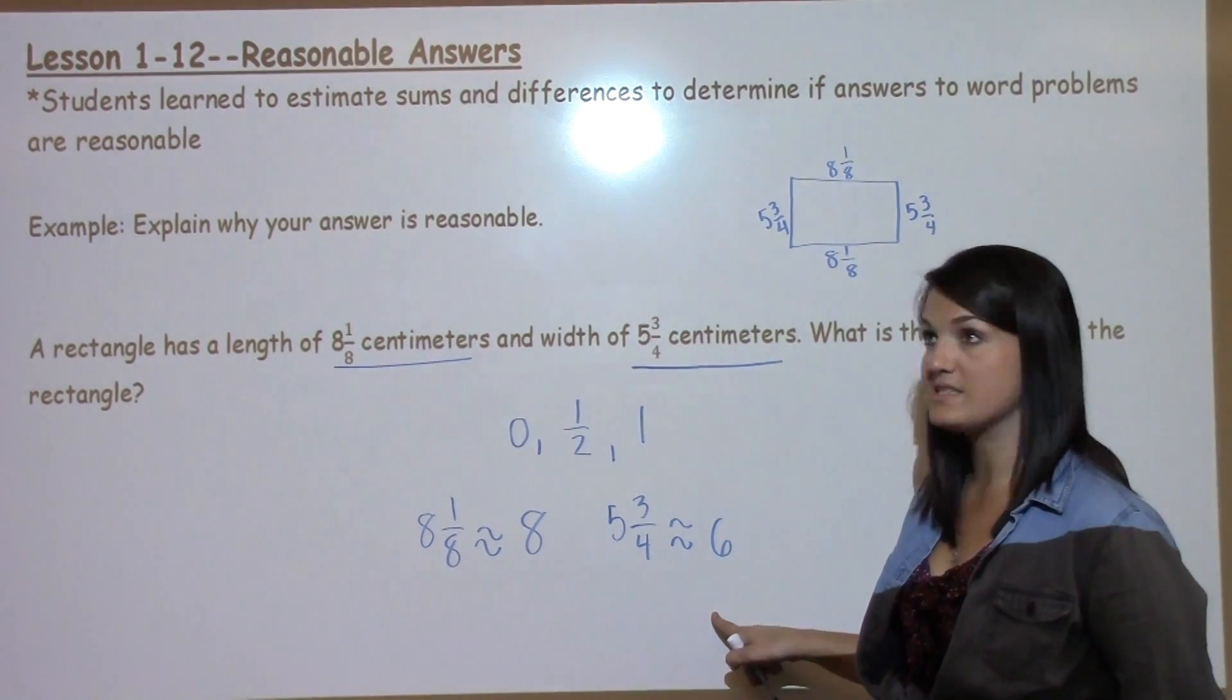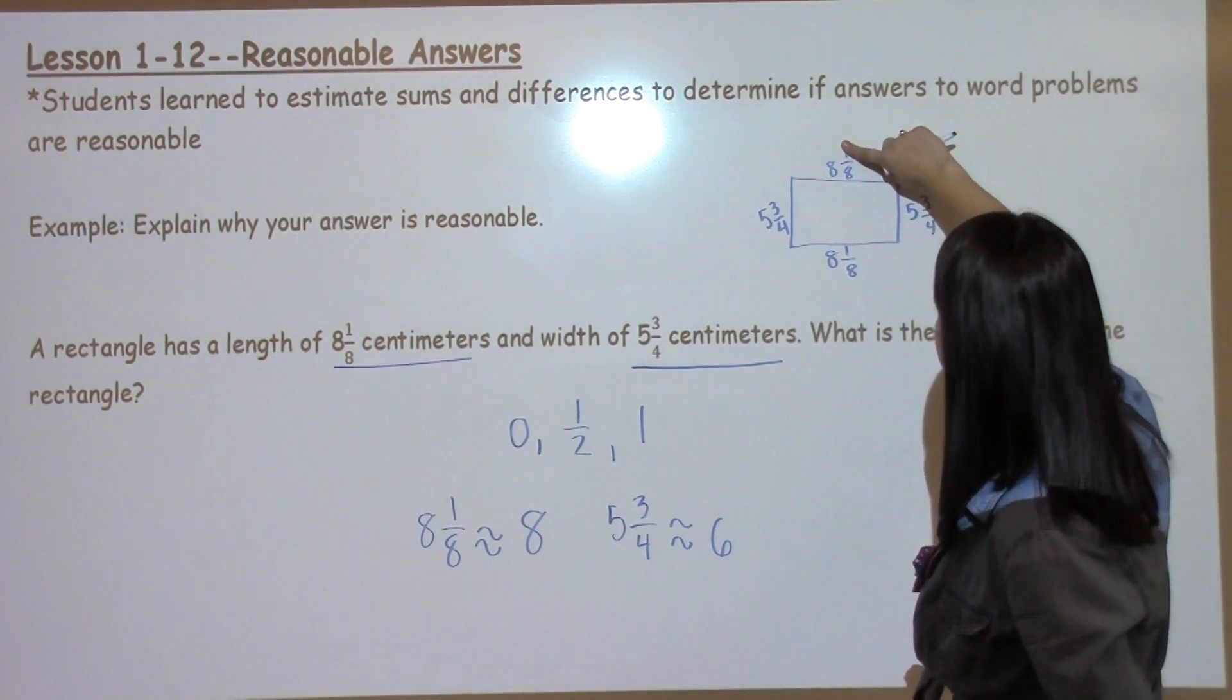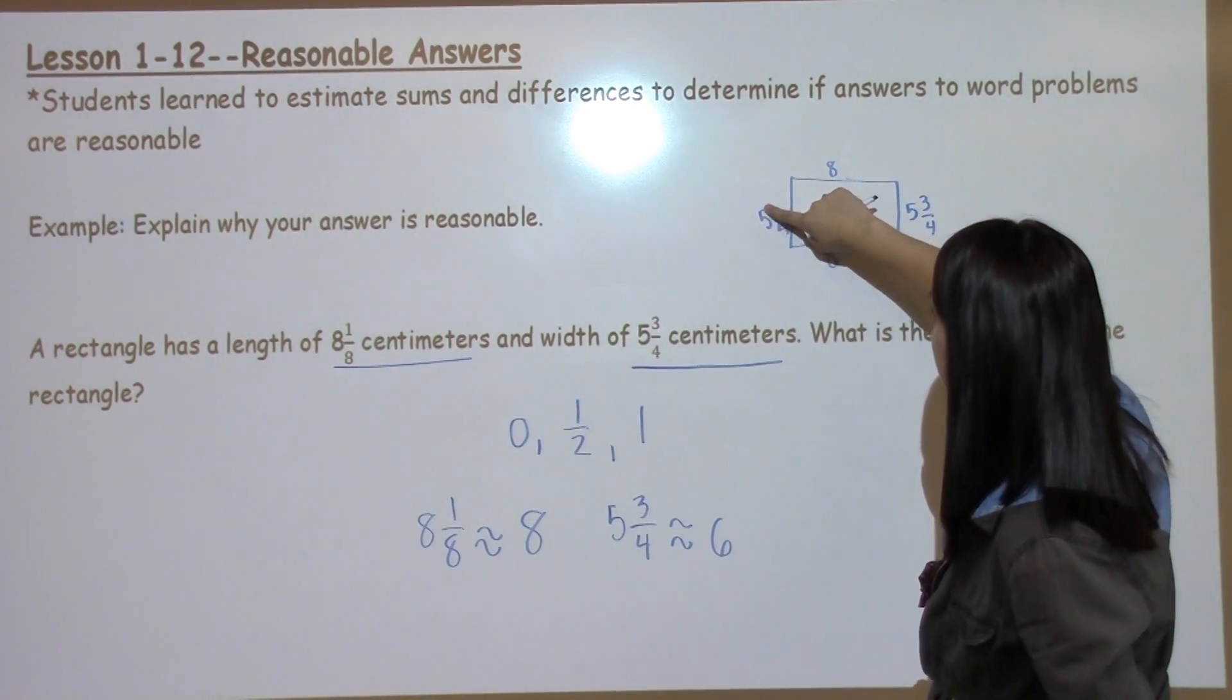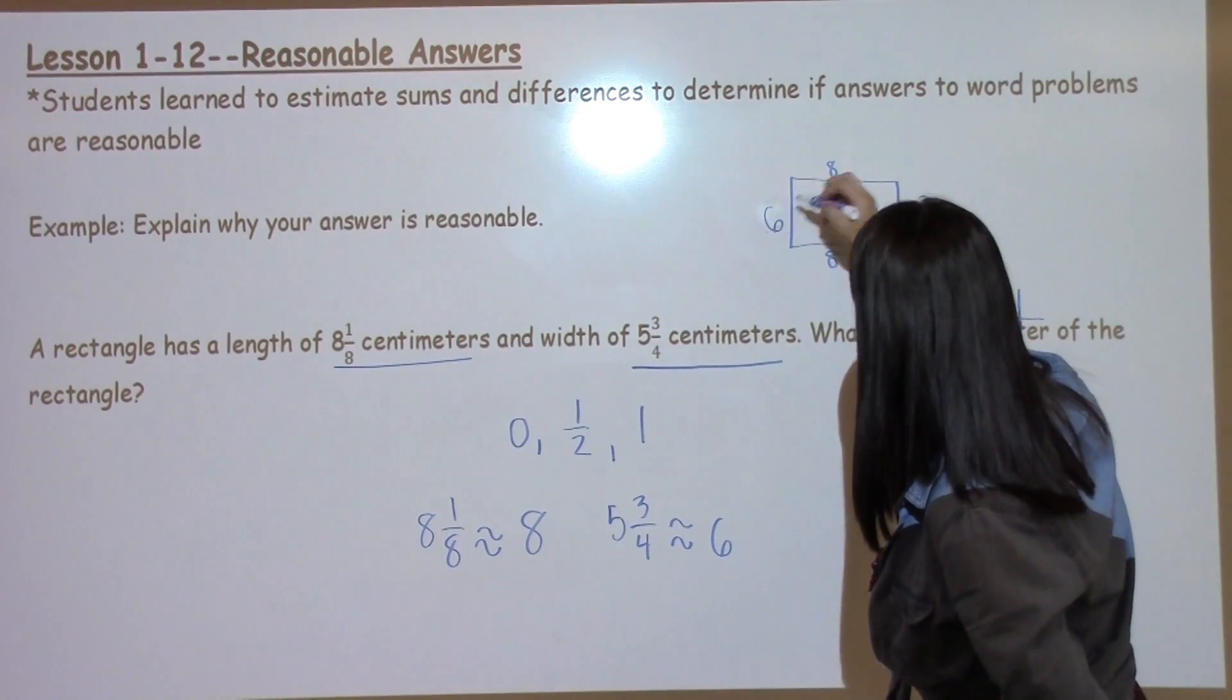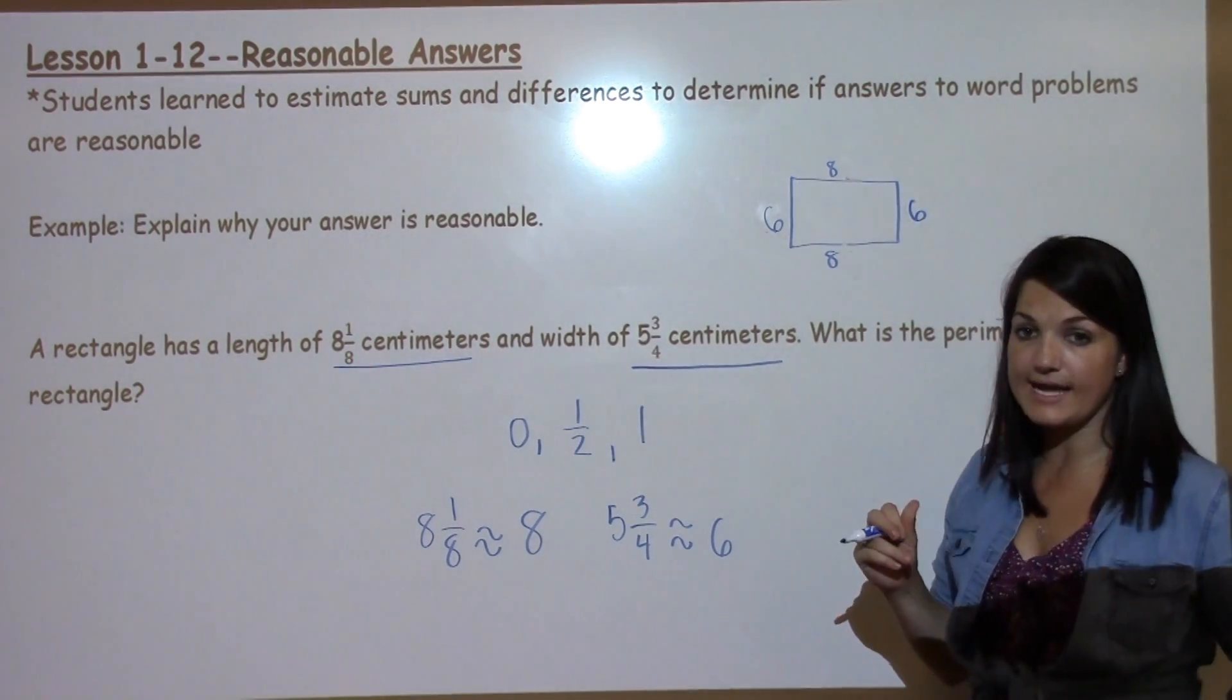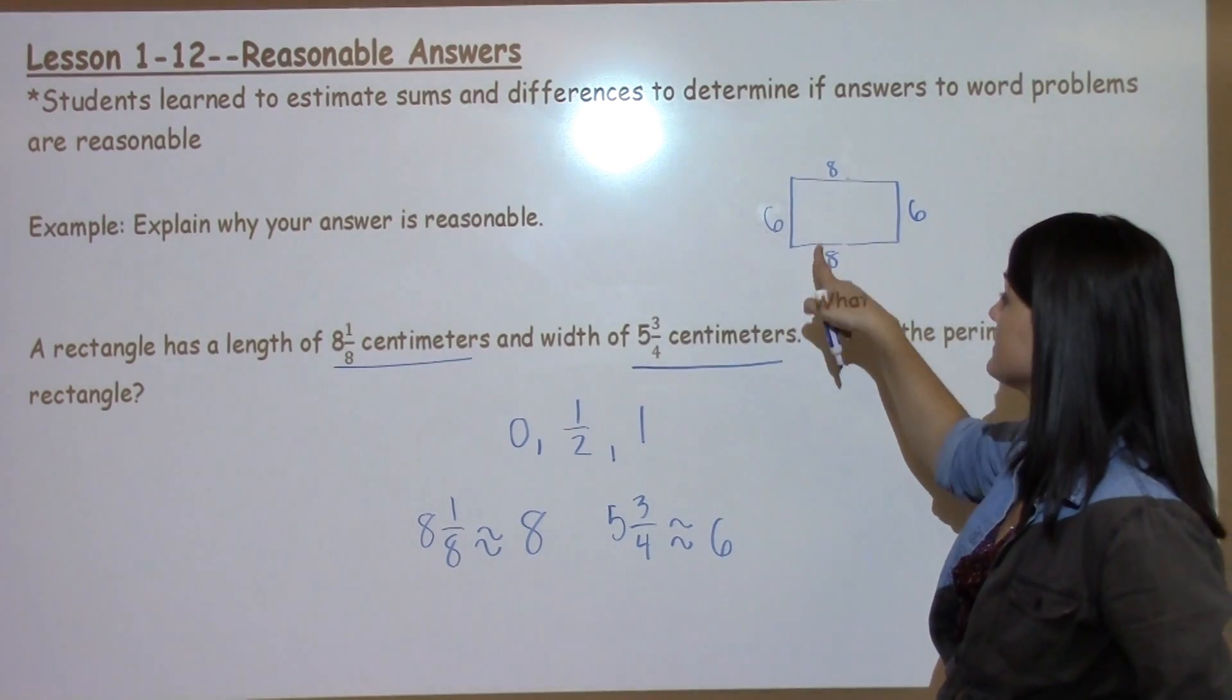So when I estimate this problem, I'm actually going to think of 8 as my length and I'm going to think of 6 as my width. Perimeter means I add up all the sides. So I'm going to take 8 plus 8, which is 16.